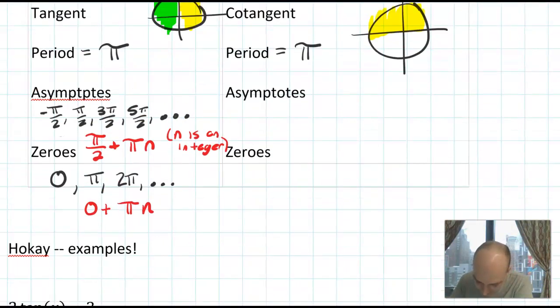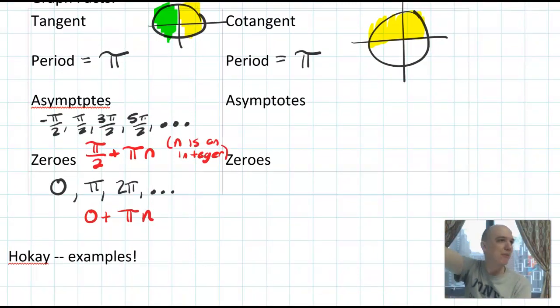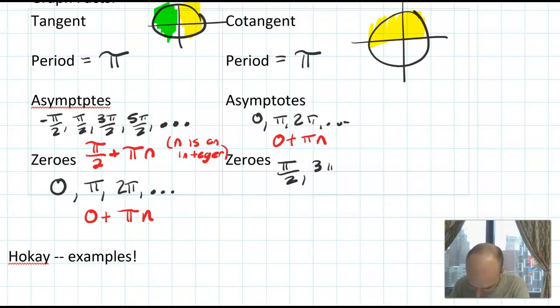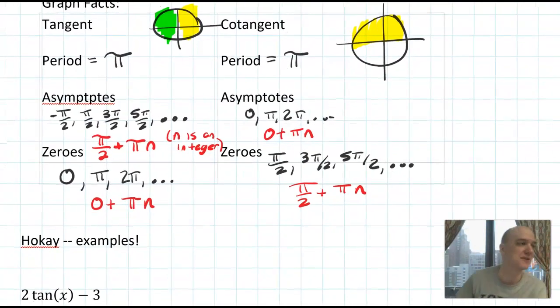For cotangent, those roles just flip. Like whenever there was a 0, now there's an asymptote. Wherever there was an asymptote, now there's a 0. So for the asymptotes of cotangent, I would write 0, π, 2π, etc. And the expression would be 0 plus πn. And for the zeros of cotangent, we write π/2, 3π/2, 5π/2. And the expression is π/2 plus πn. So these are our facts about tangent and cotangent graphs.